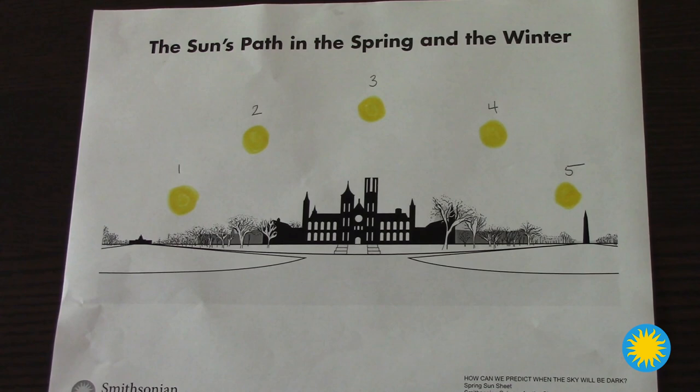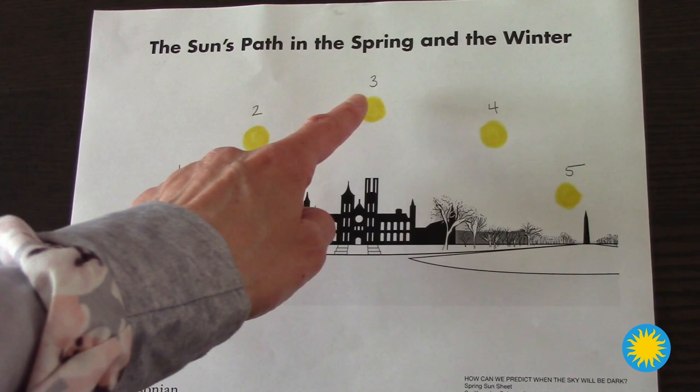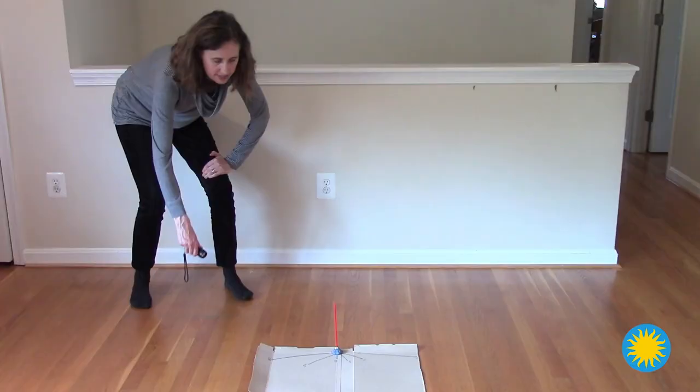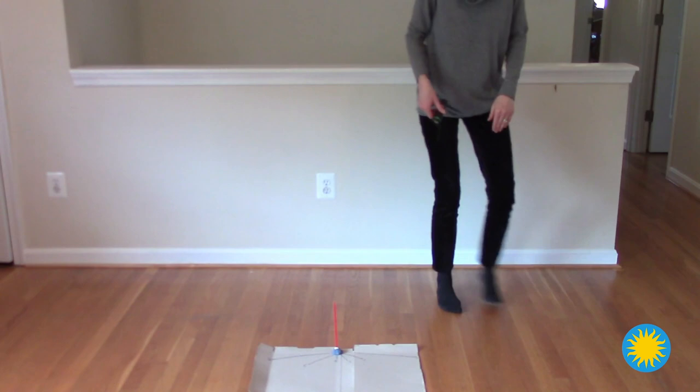The pattern I recorded from the photos is similar to the pattern I made with the flashlight. The sun rises low in one part of the sky, gets higher in the sky, and sets in a different part of the sky. That's similar to the pattern we made with the flashlight.